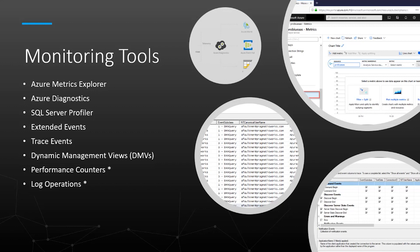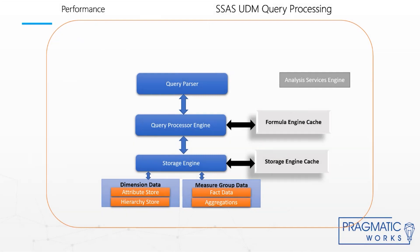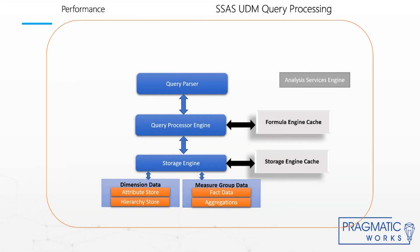These last two monitoring options are on-premises options only and multidimensional only. To understand how to conduct performance monitoring, it is also important to understand how the different flavors of Analysis Services — multidimensional and tabular — process queries, or how they answer queries.